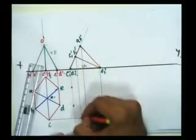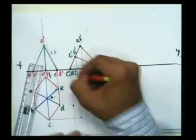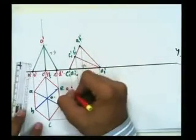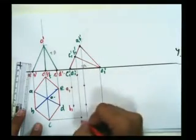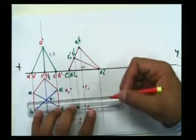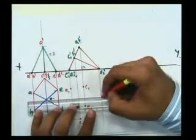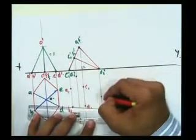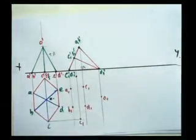The points are a1, b1, c1, d1, e1, and this point is o1. Now let's connect them quickly.